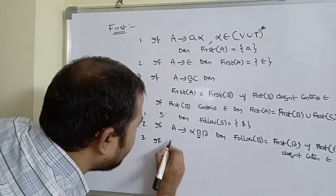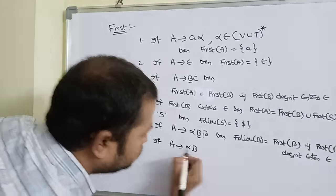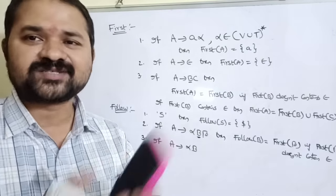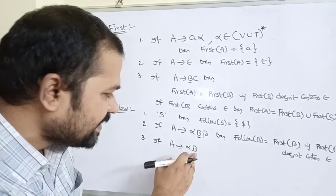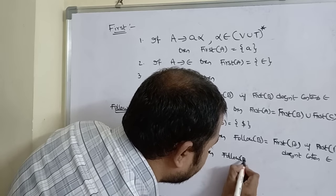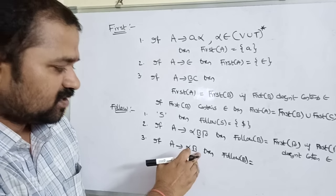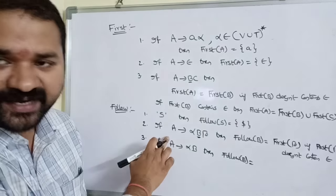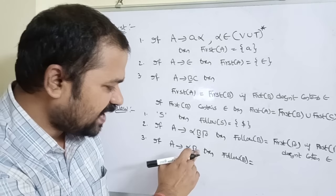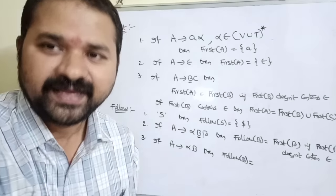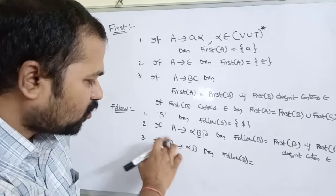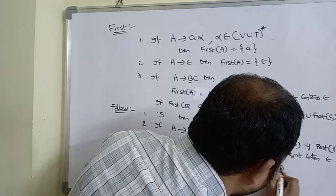The third rule: if A implies alpha·B (B is at the end), then since no symbol follows B, FOLLOW of B becomes FOLLOW of A. This also applies when A implies alpha·B·beta where beta derives epsilon — substituting epsilon makes it alpha·B, so FOLLOW of B becomes FOLLOW of A.